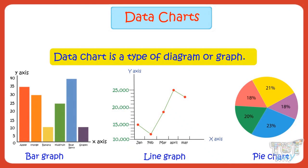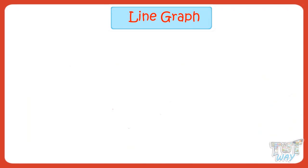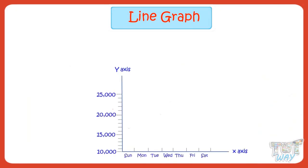There are different types of charts. Today we will learn a type of data chart which is called line graph. A line graph is also a type of data chart where information — the value of data — is displayed as a series of dots or points connected by line segments. It makes comparison easier as plotted peaks and dips make it easy to compare the values.